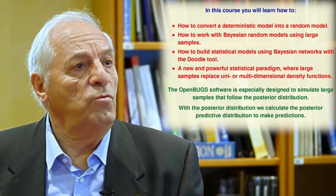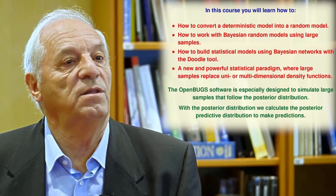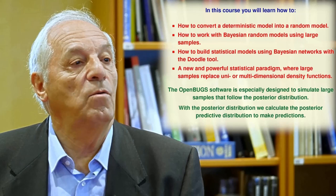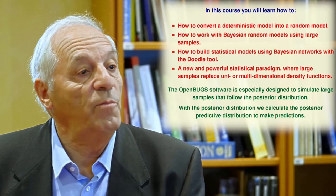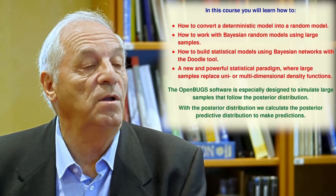In this course, you will learn how to convert a deterministic model into a random model, how to work with Bayesian random models using large samples, how to build statistical models using Bayesian networks with the Doodle tool — a new and powerful statistical paradigm where large samples replace uni- or multidimensional density functions. The OpenBUGS software is specially designed to simulate large samples that follow the posterior distribution. With the posterior distribution, we can calculate the posterior predictive distribution to make our predictions.